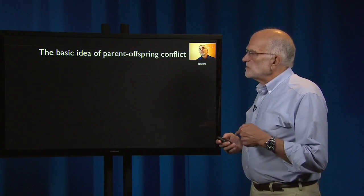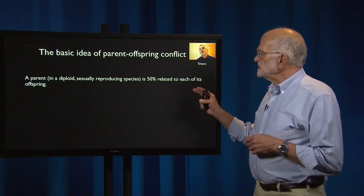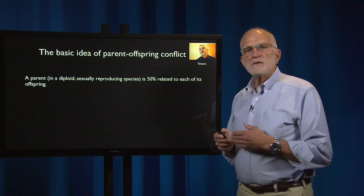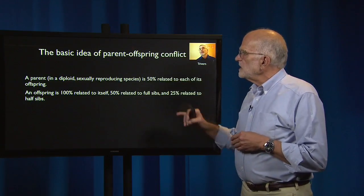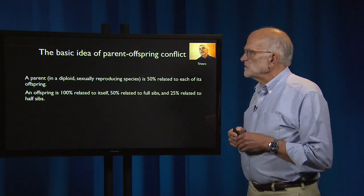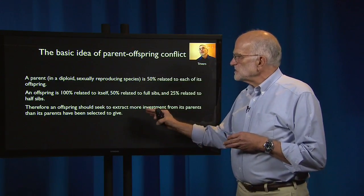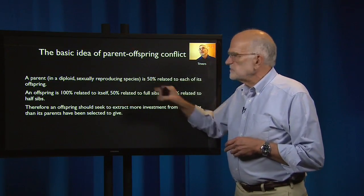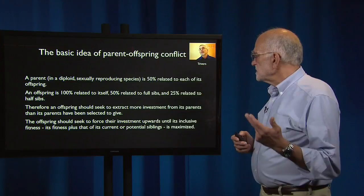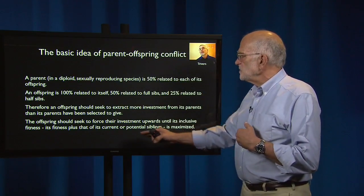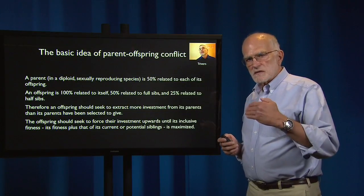The next idea is that of parent-offspring conflict, which we get from Bob Trivers. A parent in a diploid, sexually reproducing species is 50% related to each of its offspring, and that means it would like to invest equally in each of its offspring. However, the offspring is 100% related to itself, 50% related to its full sibs, and 25% related to half sibs. Therefore, an offspring should try to get more investment from its parents than its parents have been selected to give — that's the difference between 100% and 50%. The offspring should seek to force parental investment upwards until its inclusive fitness — its own fitness plus what it would get from current or potential siblings — is maximized. It doesn't try to take everything, but it tries to take more than the parent wants to give.